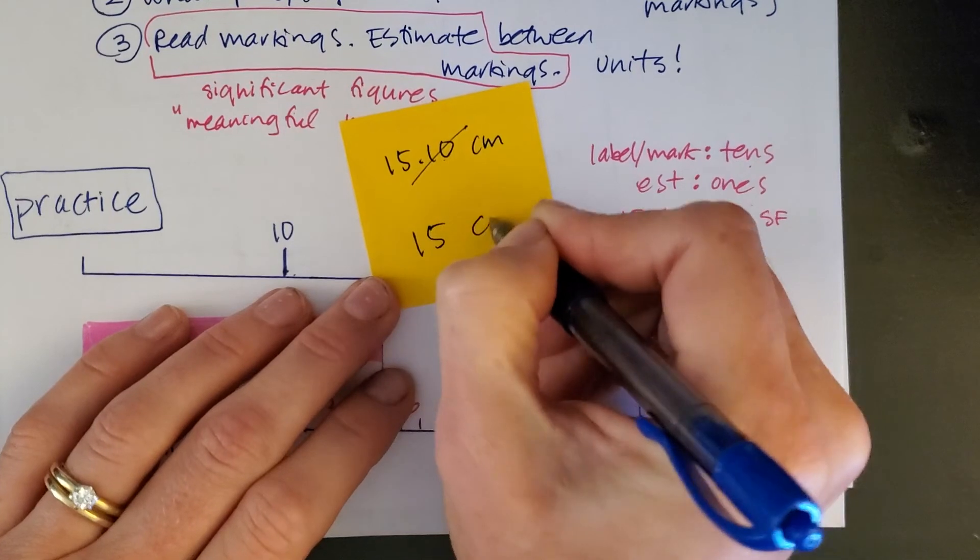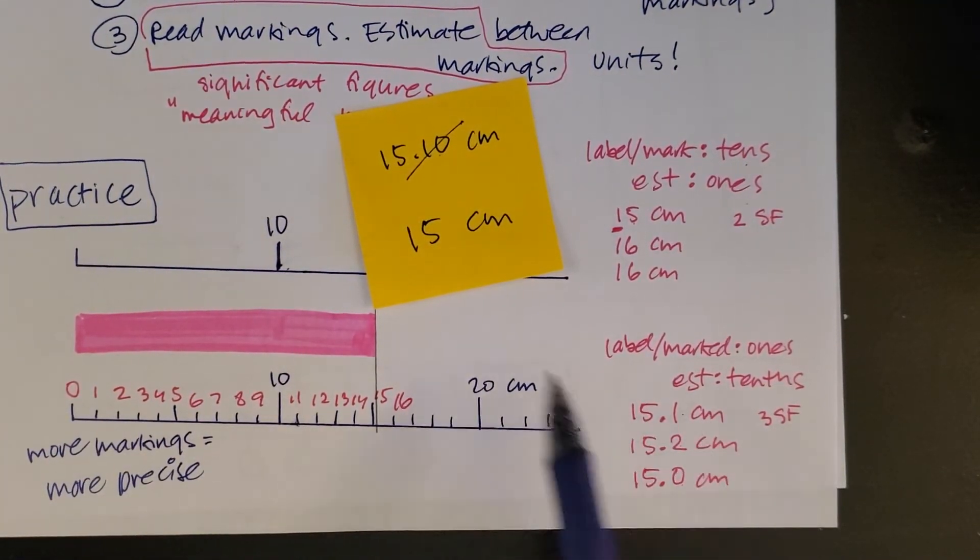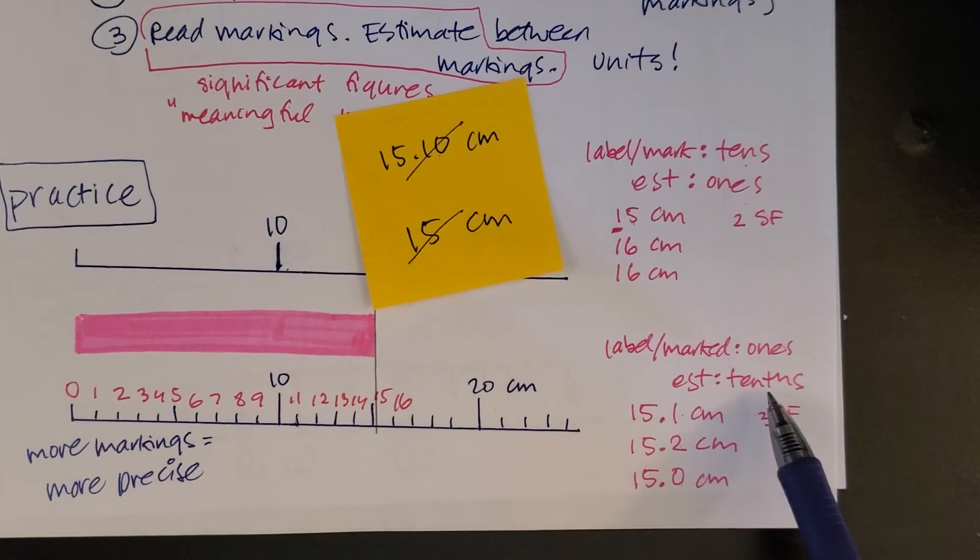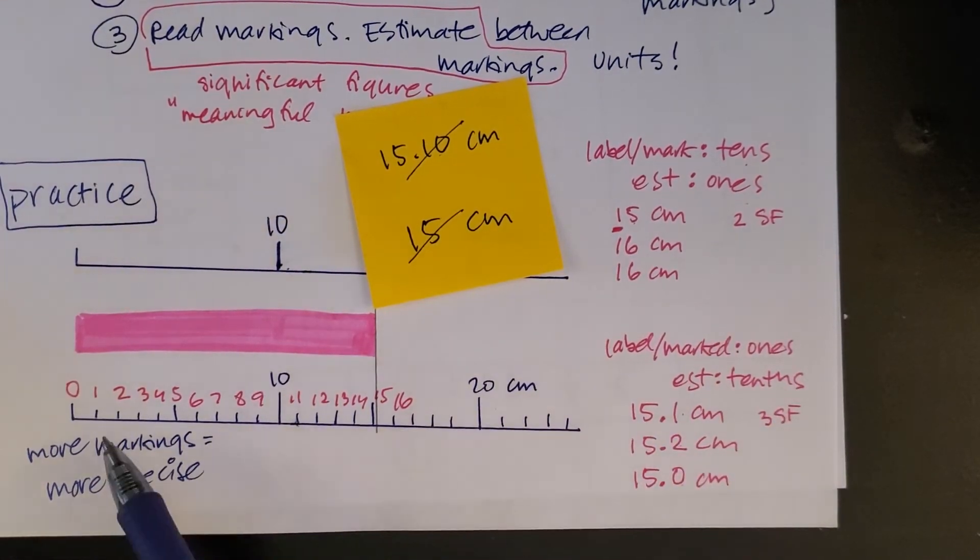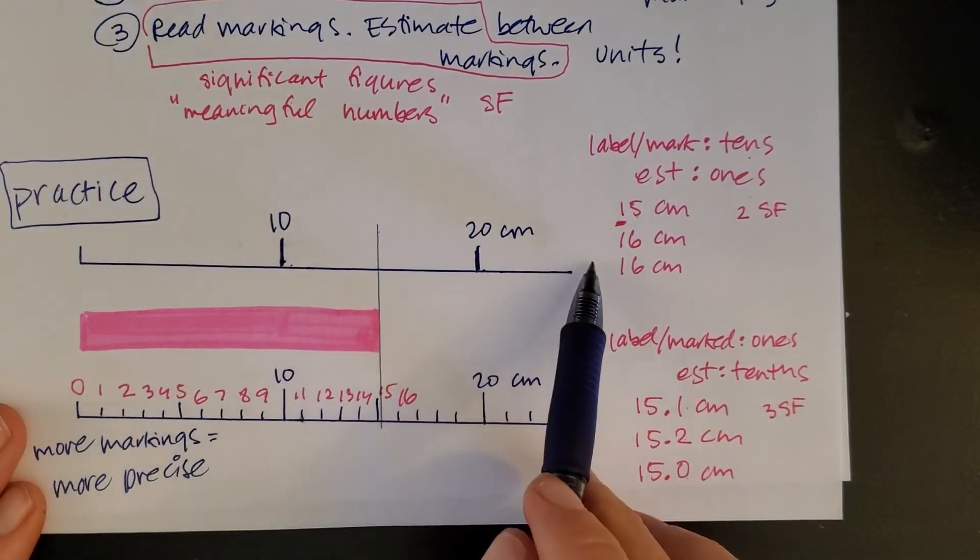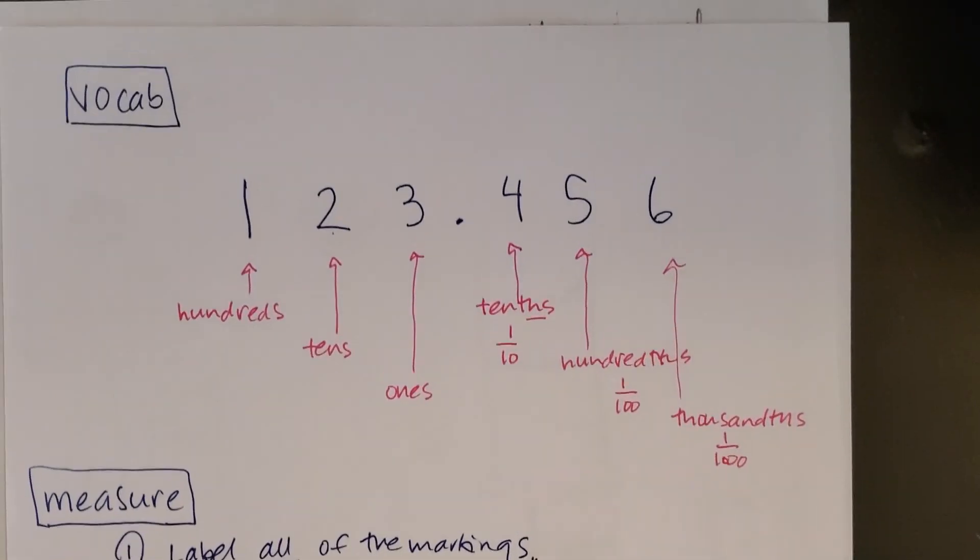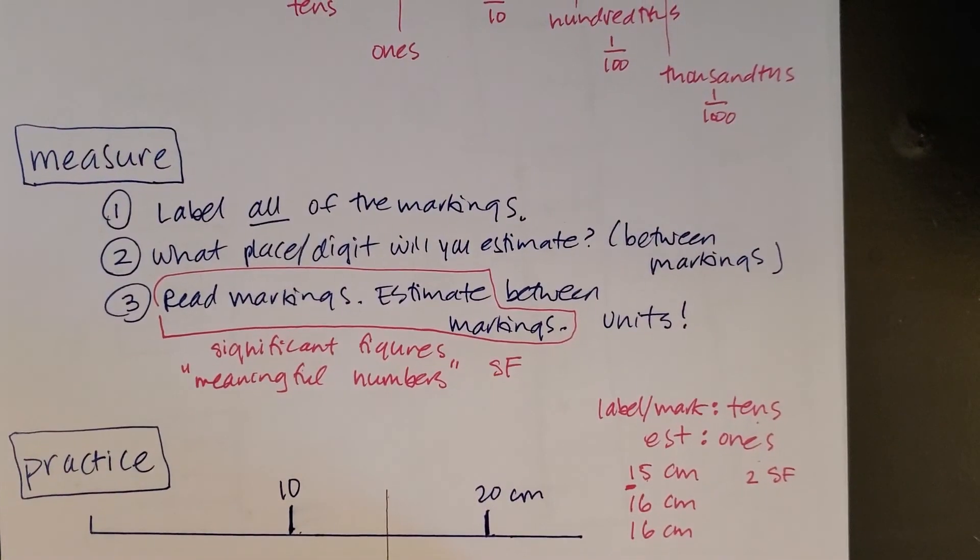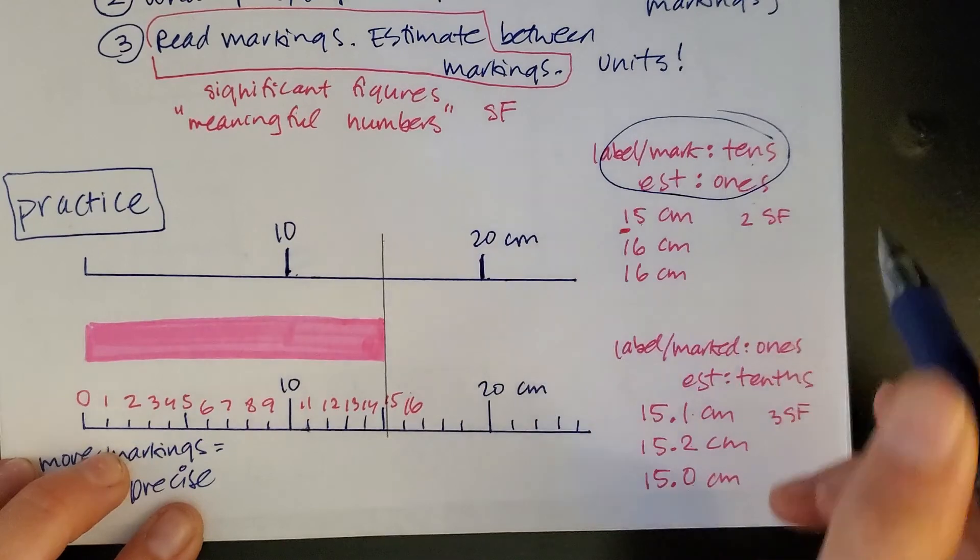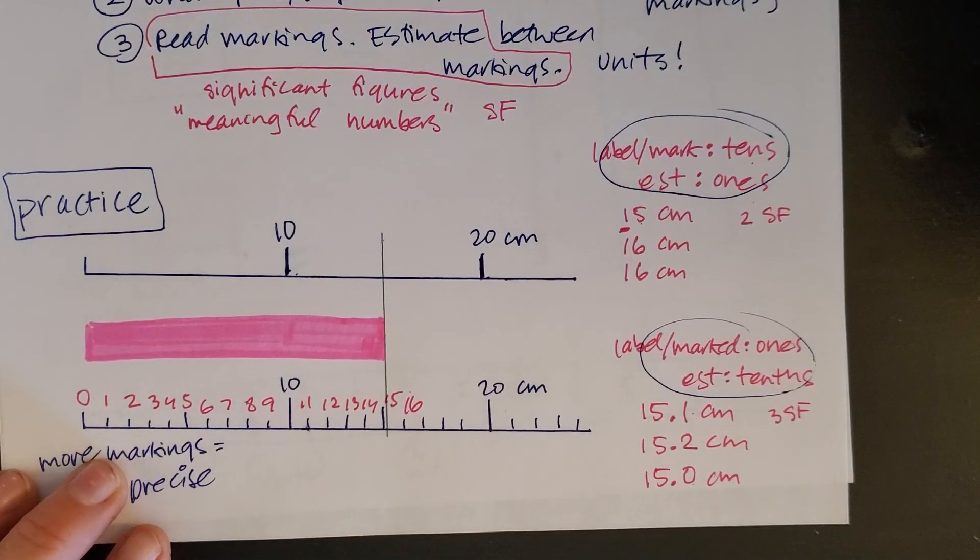Also, no good if you write 15 centimeters because now I picked up a more precise instrument, but you didn't give me a precise number to match that precise instrument. So those would not be correct. The correct answer will always go to the tenths place on this instrument, and the correct answer will always go to the ones place on an instrument marked like that. So I hope that helps you. Think about the vocabulary that we use when we're measuring, the steps you're always going to take, and then the practice. And remember, the first thing you want to do is figure out what is marked and what am I going to estimate, then worry about your numbers.